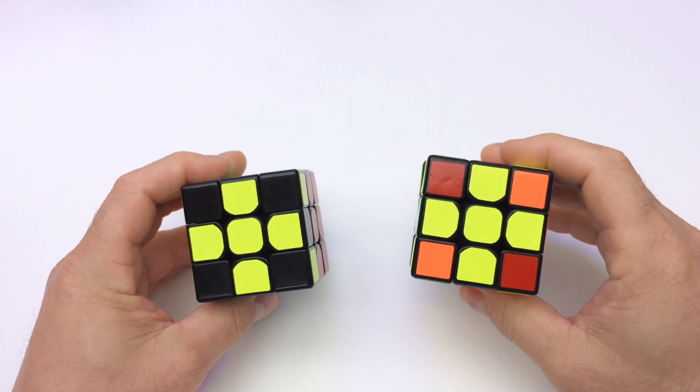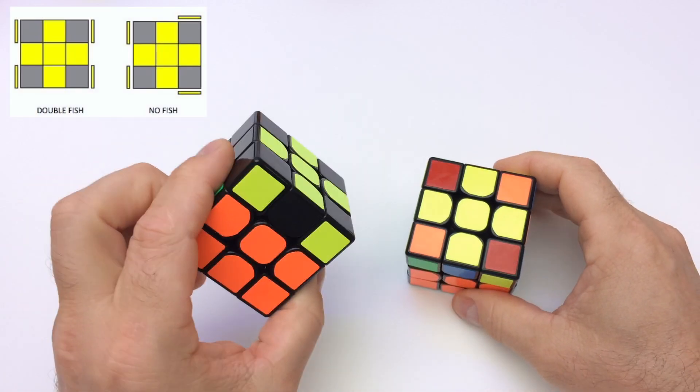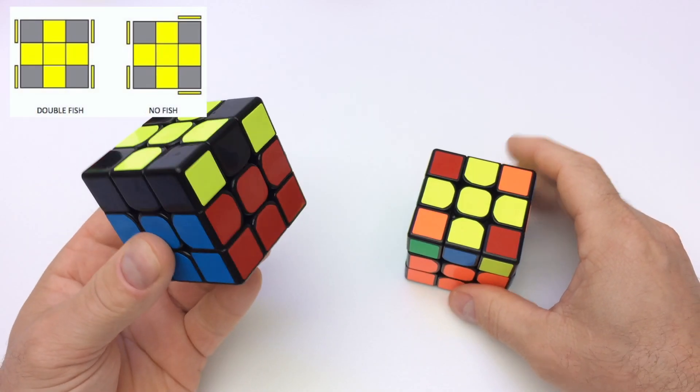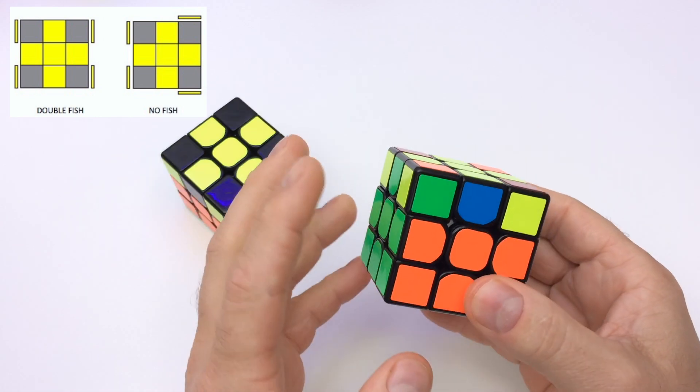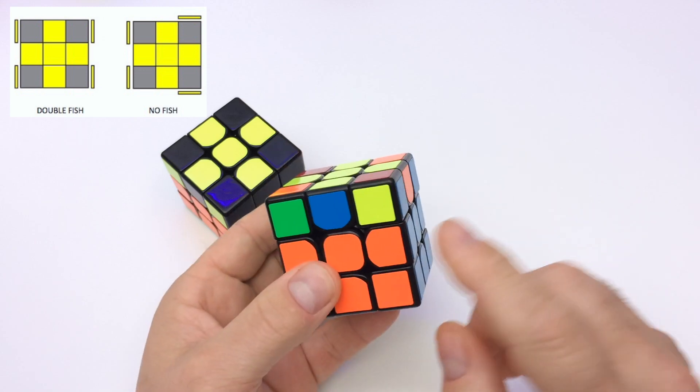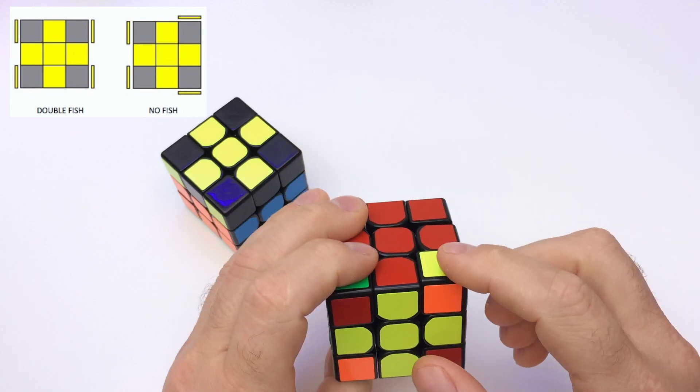Now we look at two crosses with no yellow corners on top. The first of which we call double fish has two yellows on the left and two yellows on the right. The second which we call no fish has two yellows on the left but then a yellow facing us and then a yellow to the back.